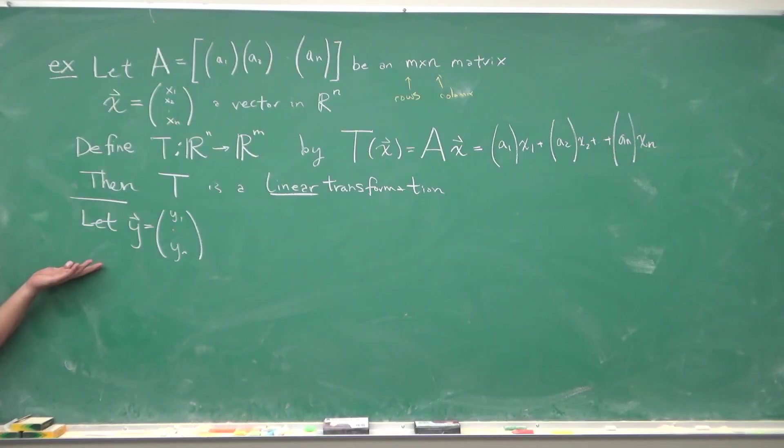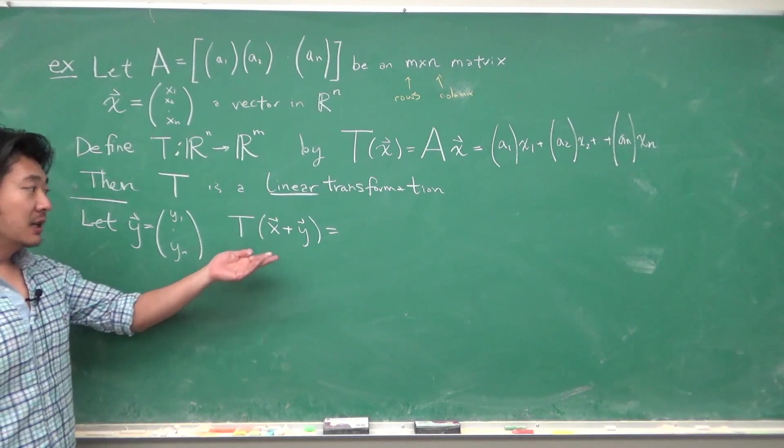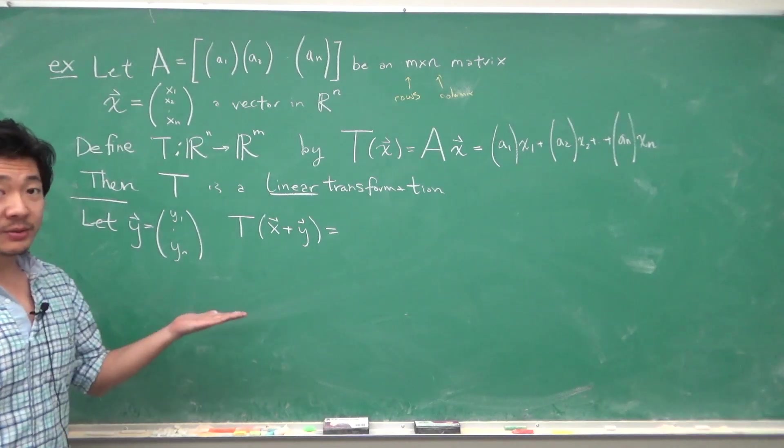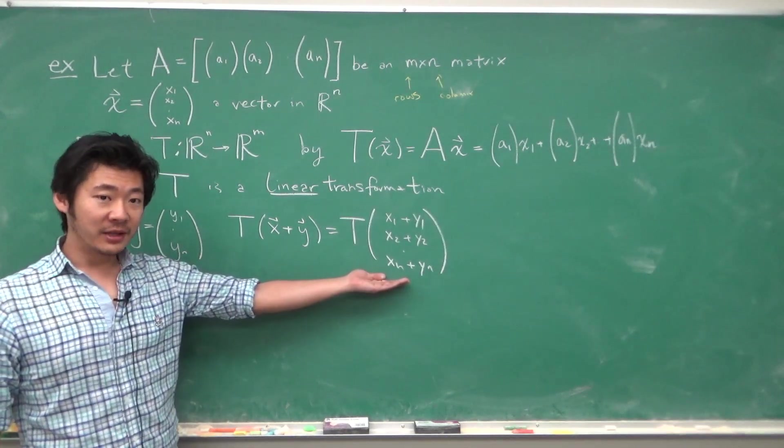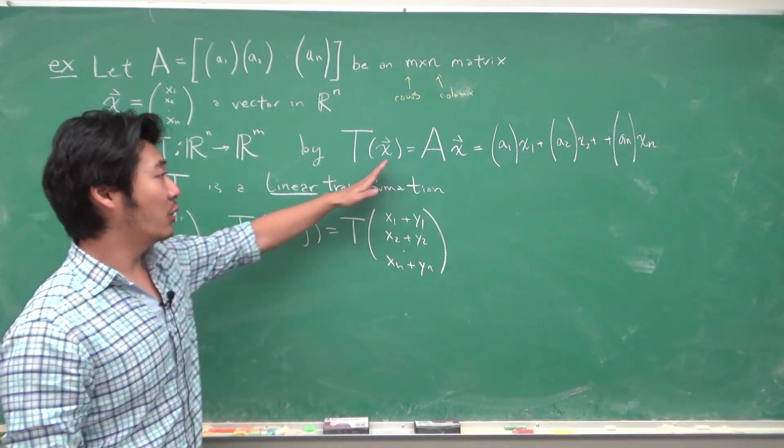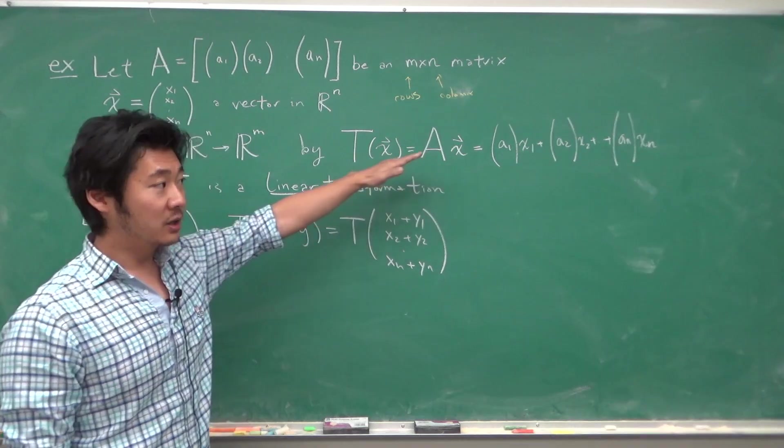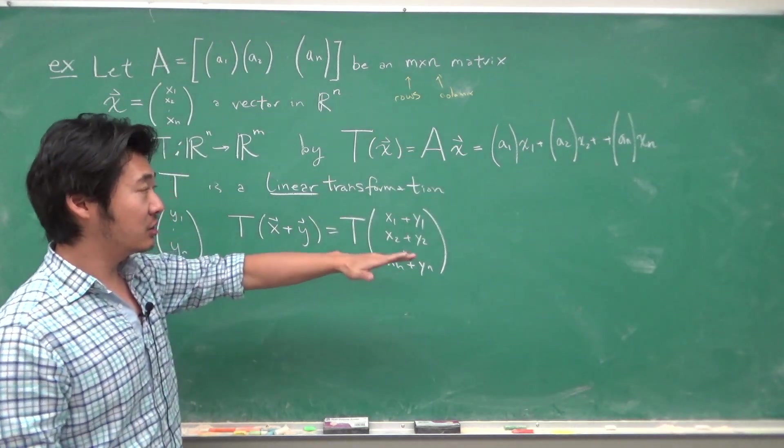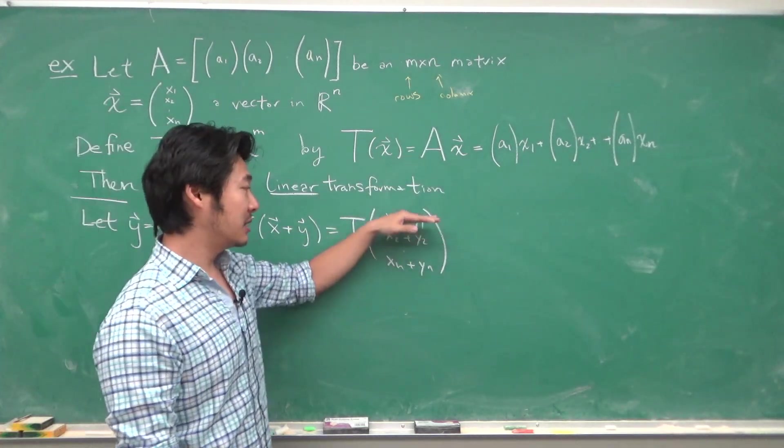Now the important fact is that a linear transformation defined in this way is a linear transformation. So let's show that. Let y be the vector (y₁,...,yₙ). Then we will compute T of x plus y. The vector x plus y is written out as something like this, where we add component by component.